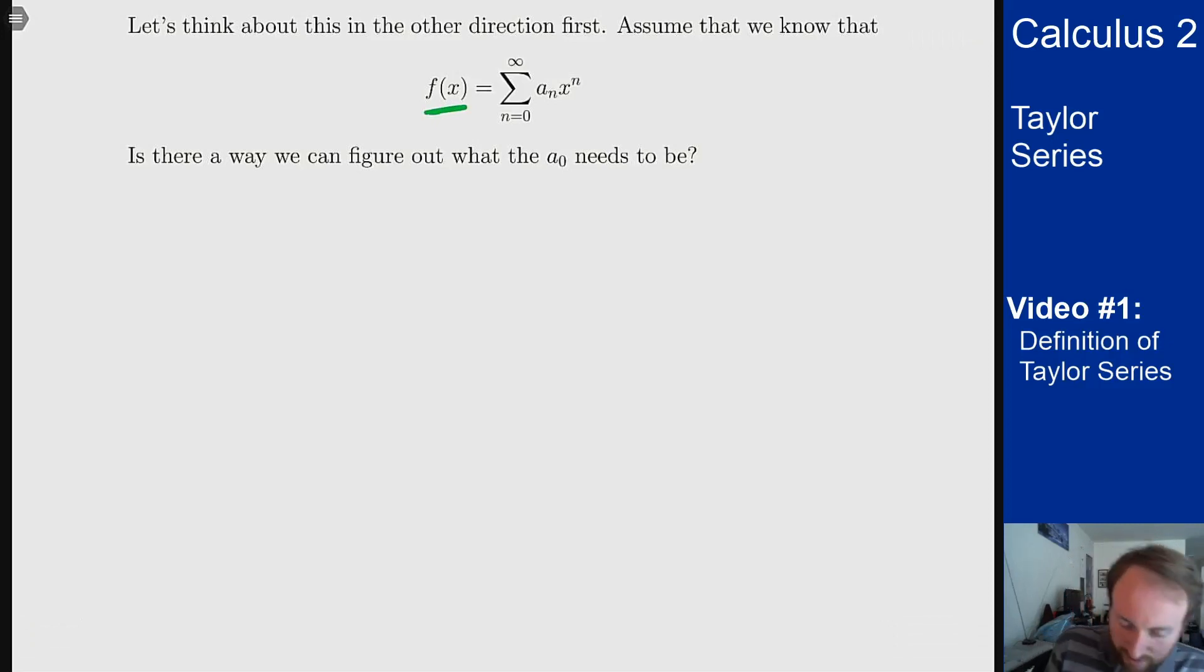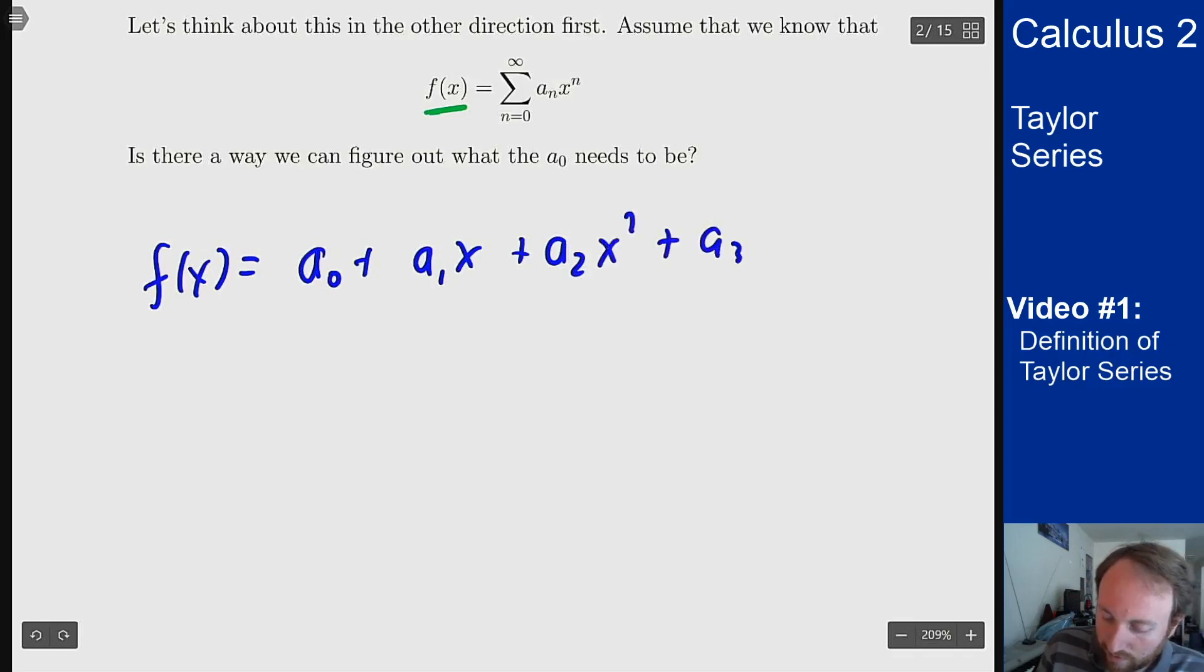Well if I write out the first couple terms here, f of x is a_0 plus a_1 x plus a_2 x squared plus a_3 x cubed and so on.